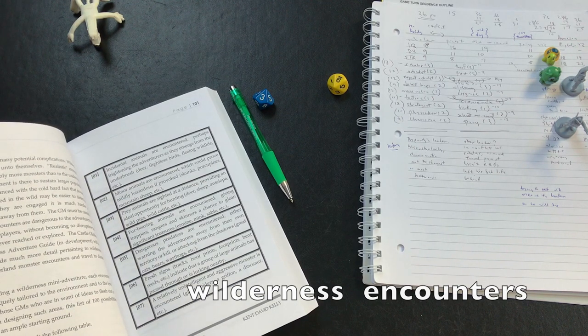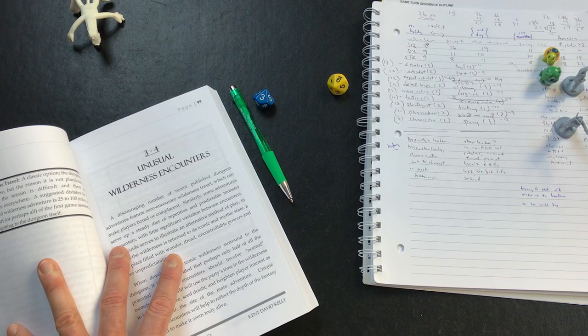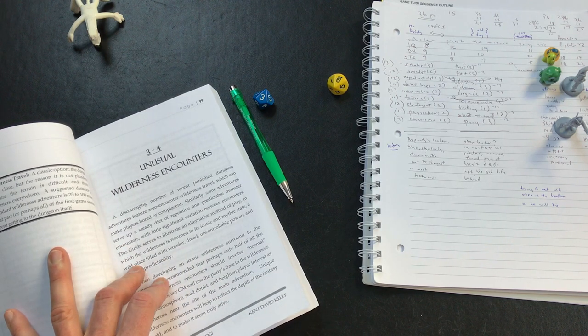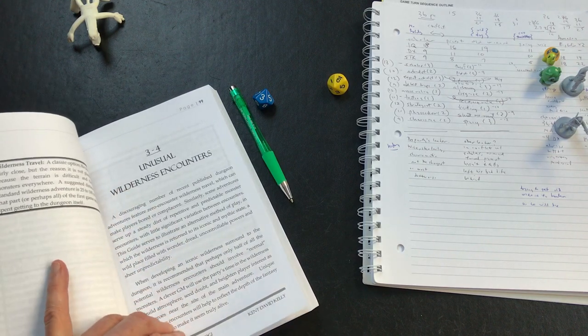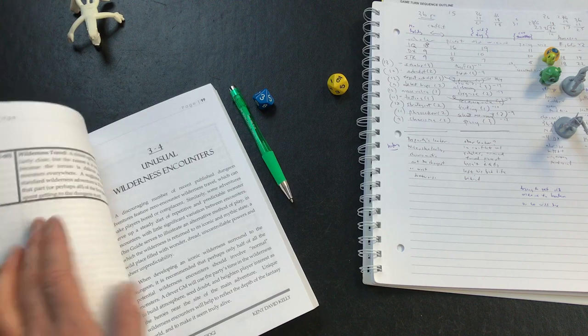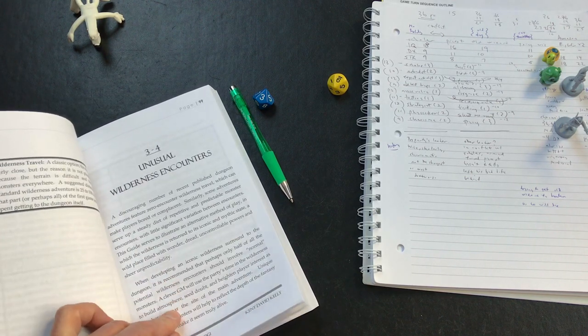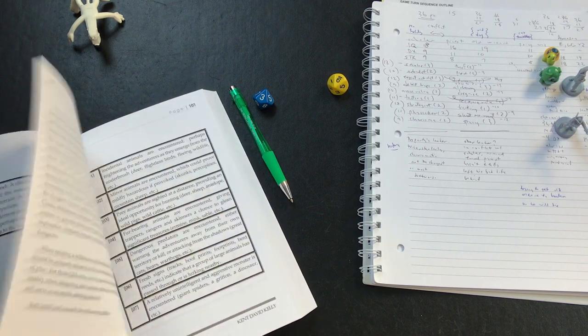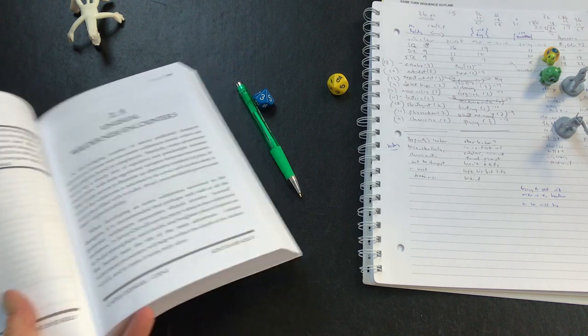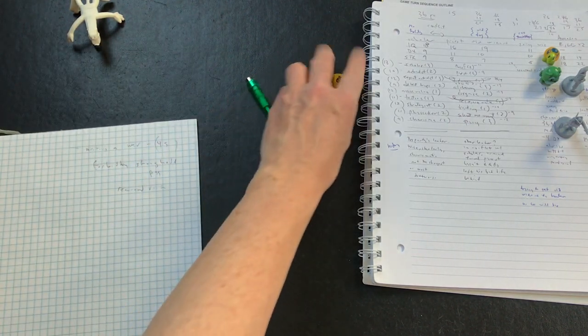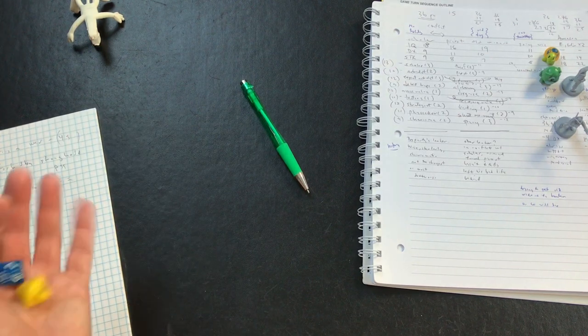The wilderness encounters - what I'm going to do here is I'm going to roll about six times and I'm going to create six encounters or events that occur in order. This will provide a little bit of structure for me in modeling the story about how they get to where they're going. I'm just going to do six rolls in a row, note the numbers down, and then we'll read what I got.